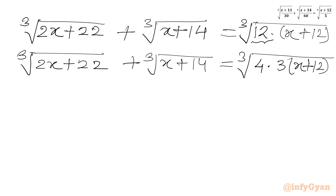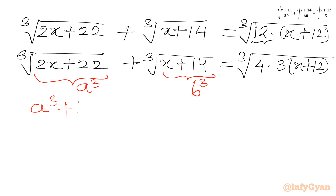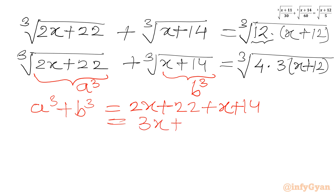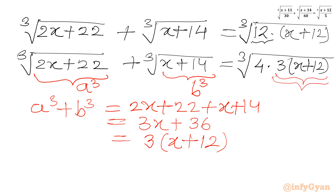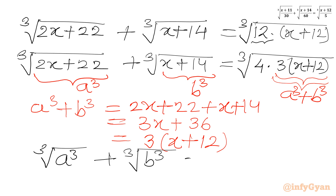Now I will use substitutions. Let the first radicand equal a cube, and the second radicand equal b cube. I will find the value of a cube plus b cube. So we can write: 2x plus 22 is a cube, and b cube is x plus 14. Adding them: 3x plus 36, or 3 times (x plus 12), which is available here. So instead of 3 times (x plus 12) on the RHS we write a cube plus b cube. Our equation becomes: cube root of a cube plus cube root of b cube equals cube root of 4 times (a cube plus b cube).